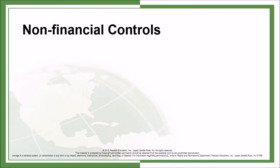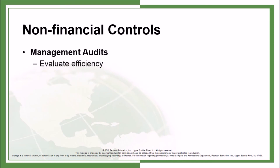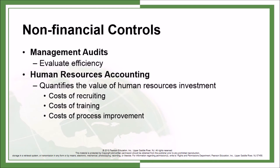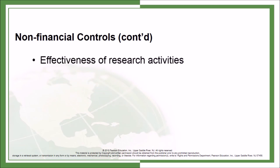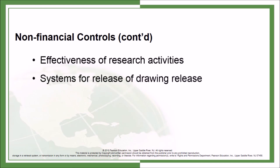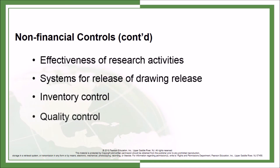Non-financial controls include management audits, which evaluate efficiency. Human resources accounting quantifies the value of human resources investment, such as costs of recruiting, costs of training, and costs of process improvement. Social controls involve standards, comparison with outcomes, and corrective action. Other non-financial controls include effectiveness of research activities, systems for release of drawings, inventory control, and quality control.